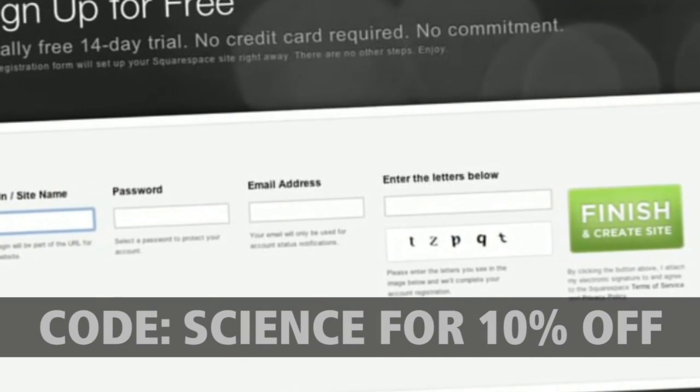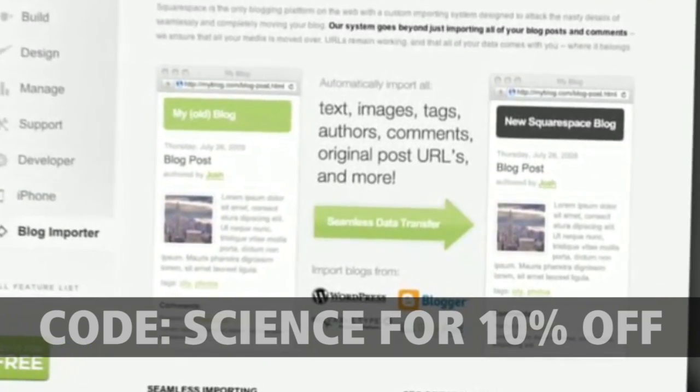So make sure you check out squarespace.com if you want to learn more. And when you check out, enter the code SCIENCE and you'll get 10% off the lifetime of your order.